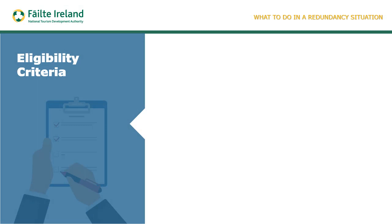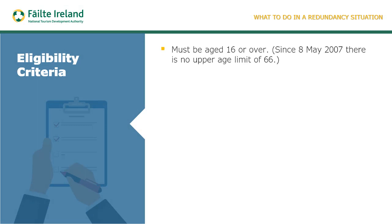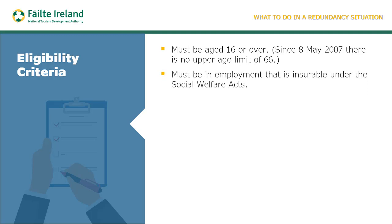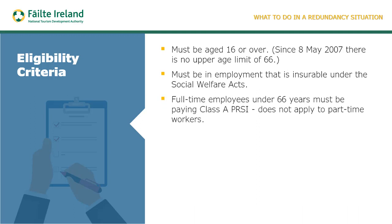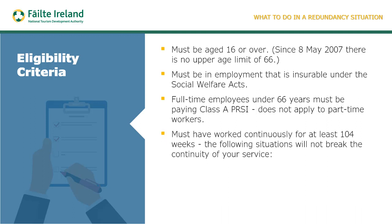To be eligible for a redundancy payment, the following requirements must be met: the employee must be aged 16 or over — there is no longer an upper limit of 66 as there used to be. You must be in employment that is insurable under the Social Welfare Acts. Full-time employees under the age of 66 must be paying Class A PRSI. This insurability requirement does not apply to part-time workers. You must have continuously worked for your employer for 104 weeks.